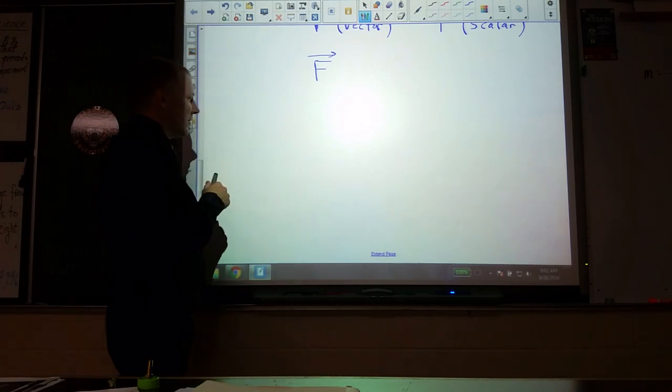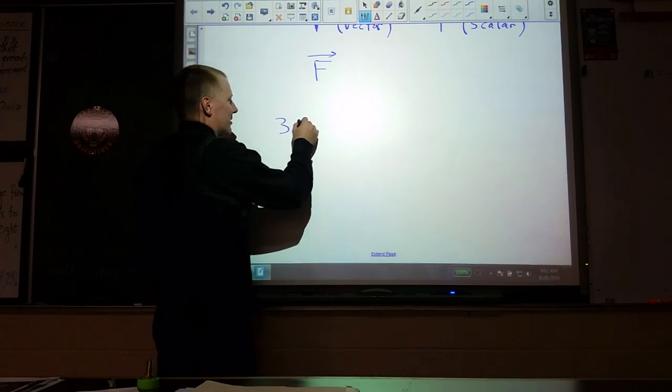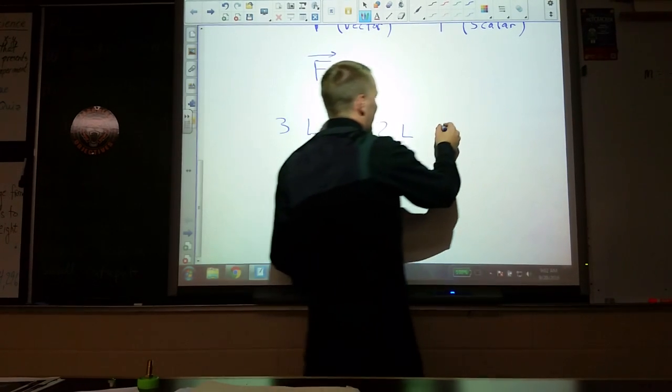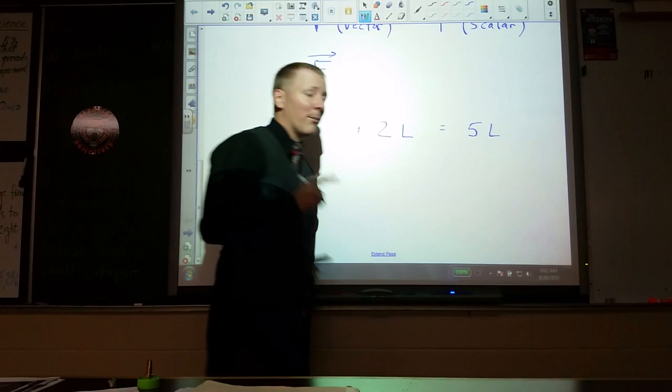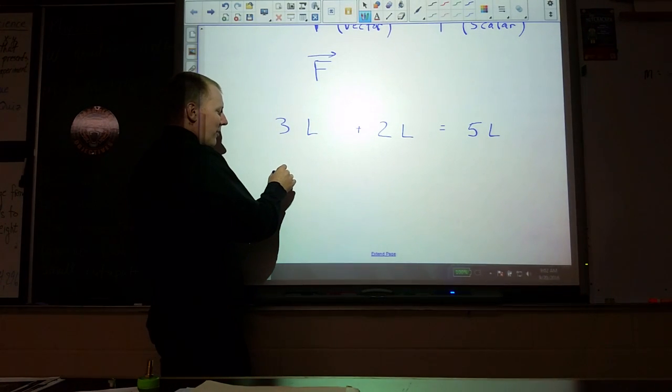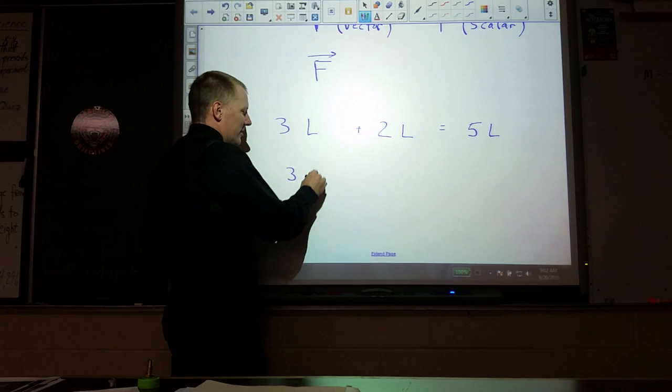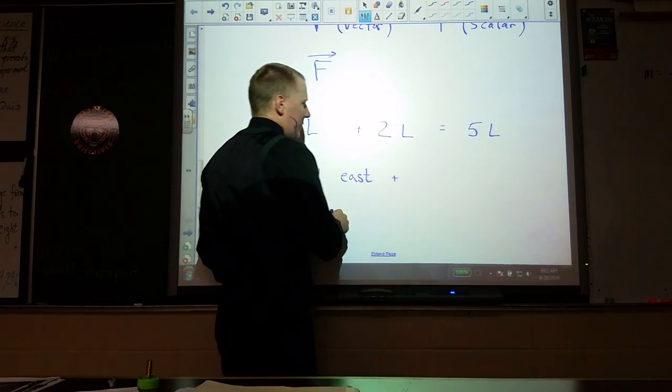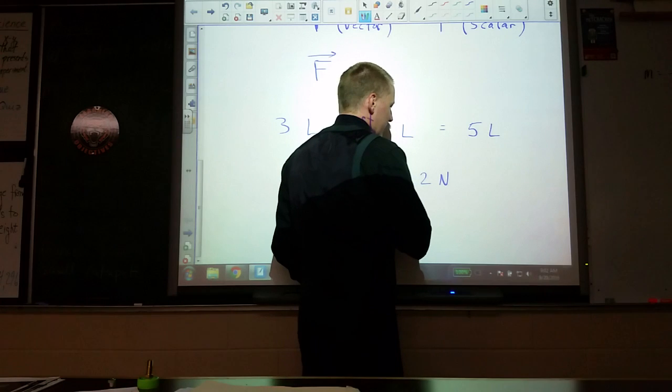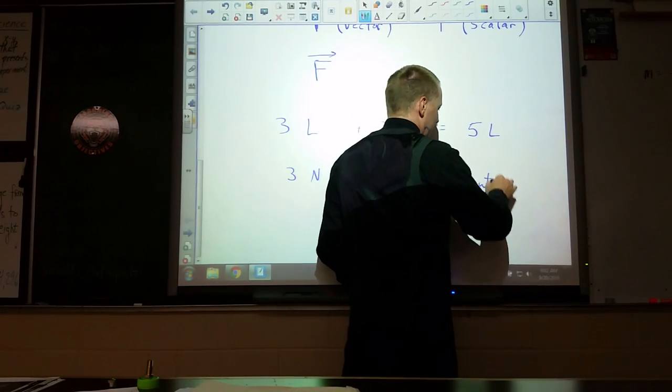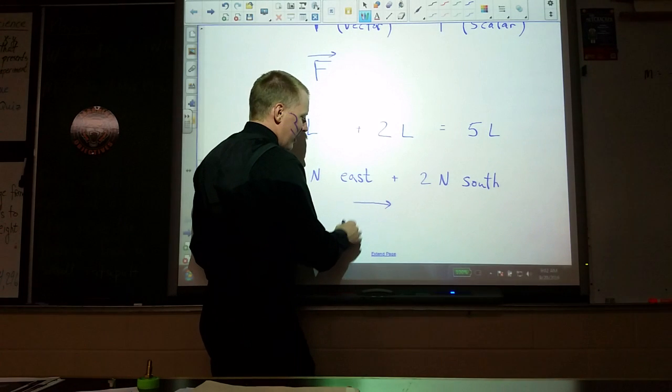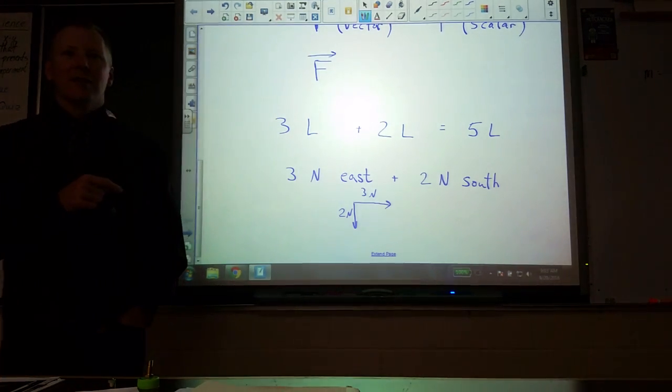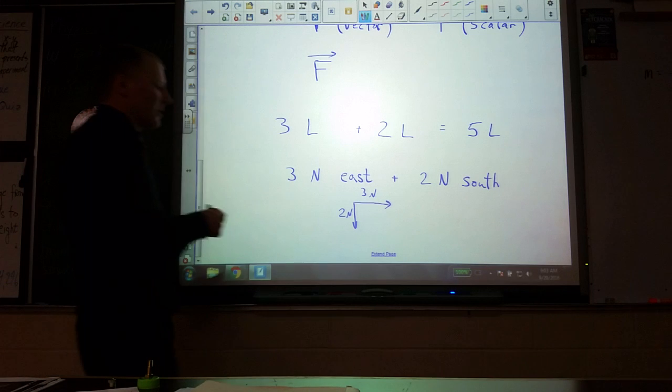If you have three liters of fluid and you add another two liters of fluid, it's very easy - it's just five liters. But if you have a force of three newtons acting on something in the easterly direction, and then you add a force of two newtons acting in the southerly direction, something pushing this way and this way, we can't handle it just by adding the numbers up anymore.